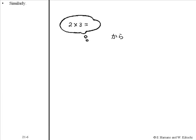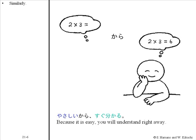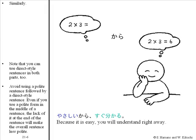Similarly, yasashii kara sugu wakaru. Note that you can use direct style sentences in both parts too. Avoid using a polite sentence followed by a direct style sentence. Even if you use a polite form in the middle of a sentence, the lack of it at the end of the sentence will make the overall sentence less polite.